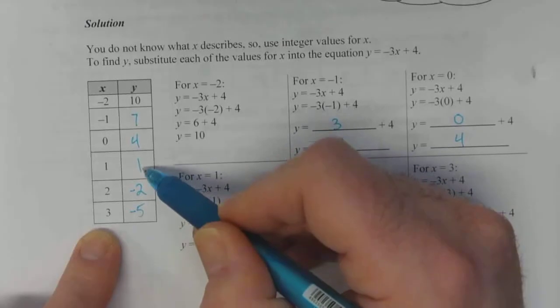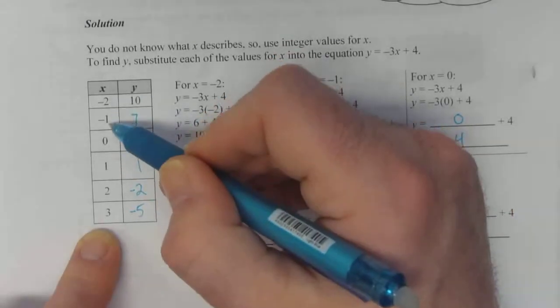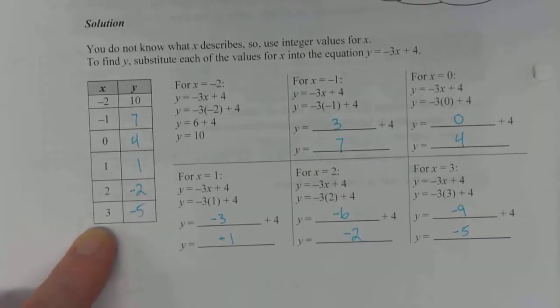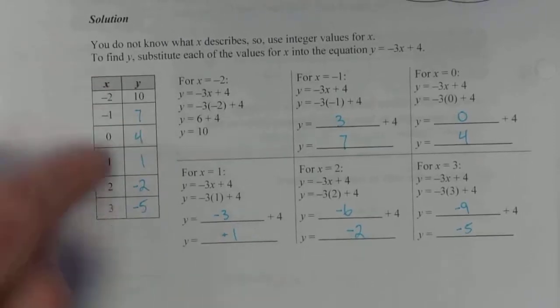So yes. The pattern continues. This goes down by 3 each time. Where this keeps going up by 1. So we've got 2 different patterns going on here for our x and our y. But it's consistent for each variable.